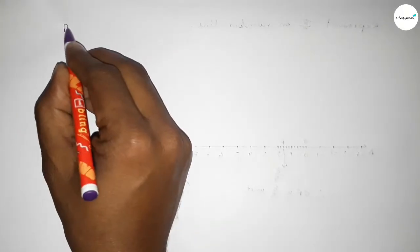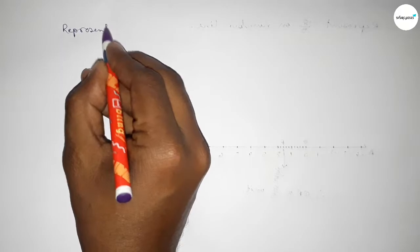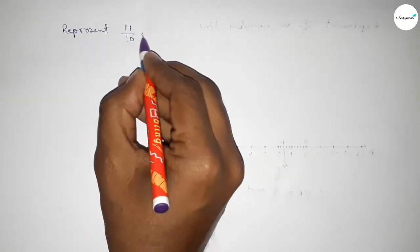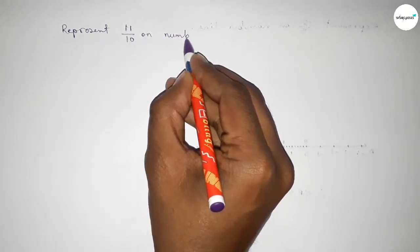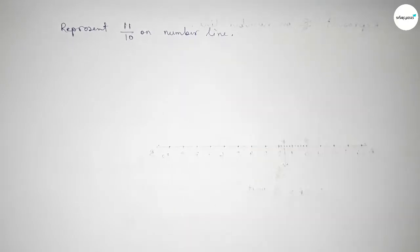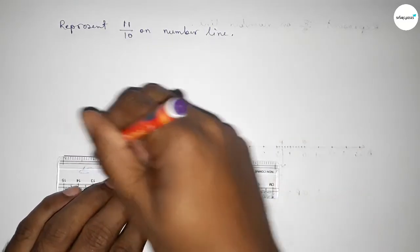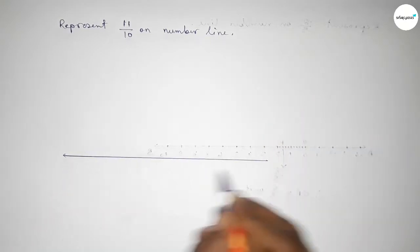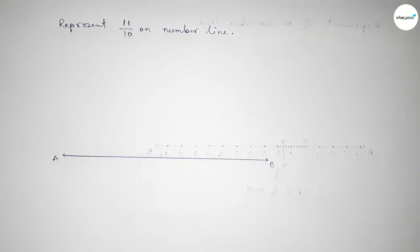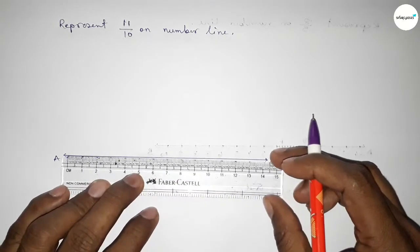Hi everyone, welcome to SI Share Classes. Today in this video we have to represent 11 over 10 on number line. So let's start the video. First of all, we have to draw here a number line. So first drawing here a line and taking arrow mark on both sides, and this is AB line.